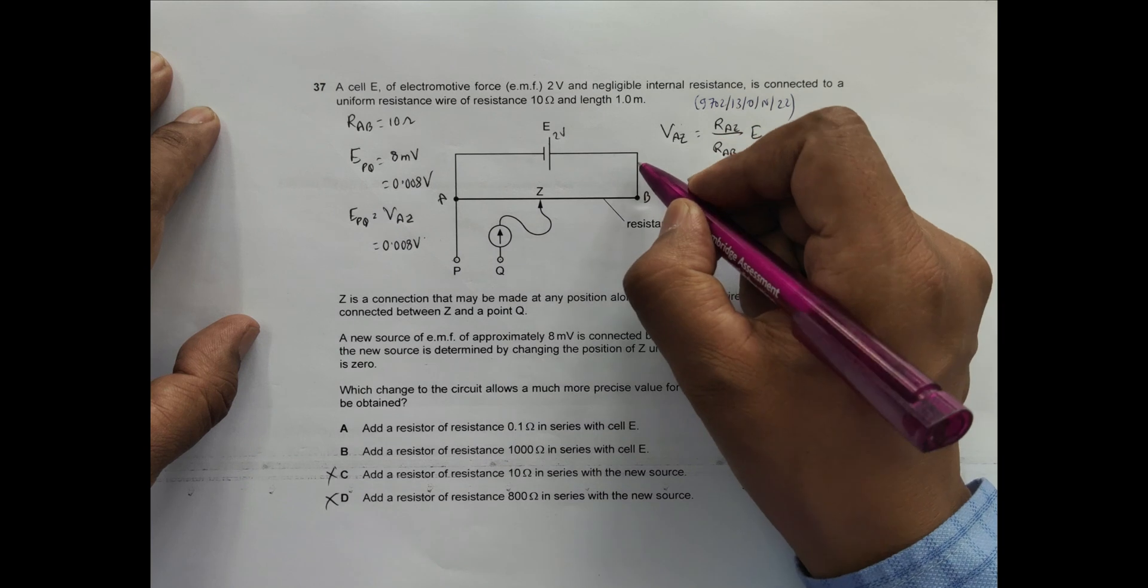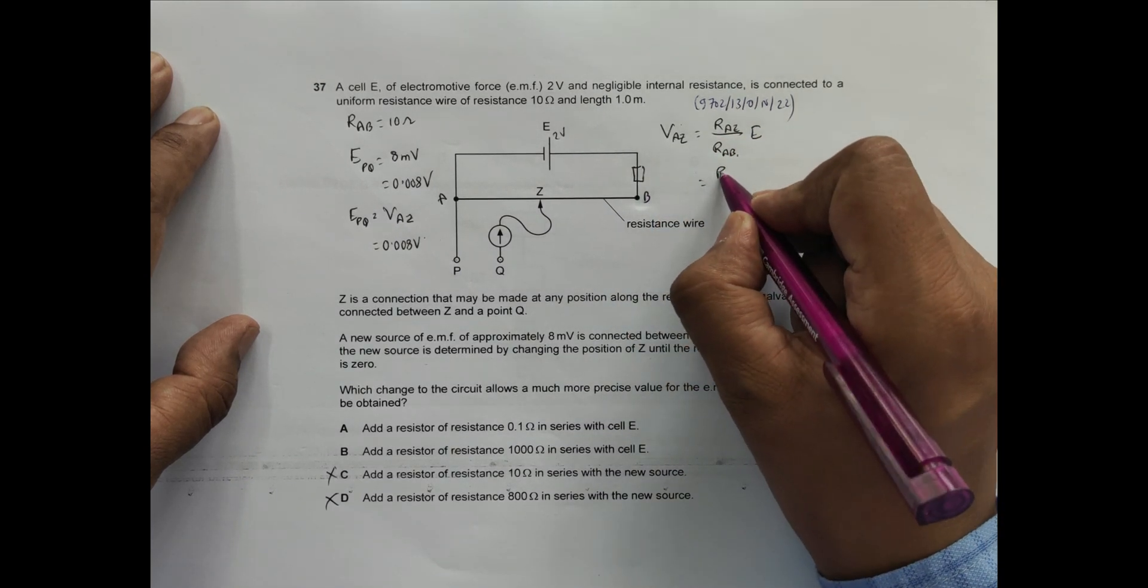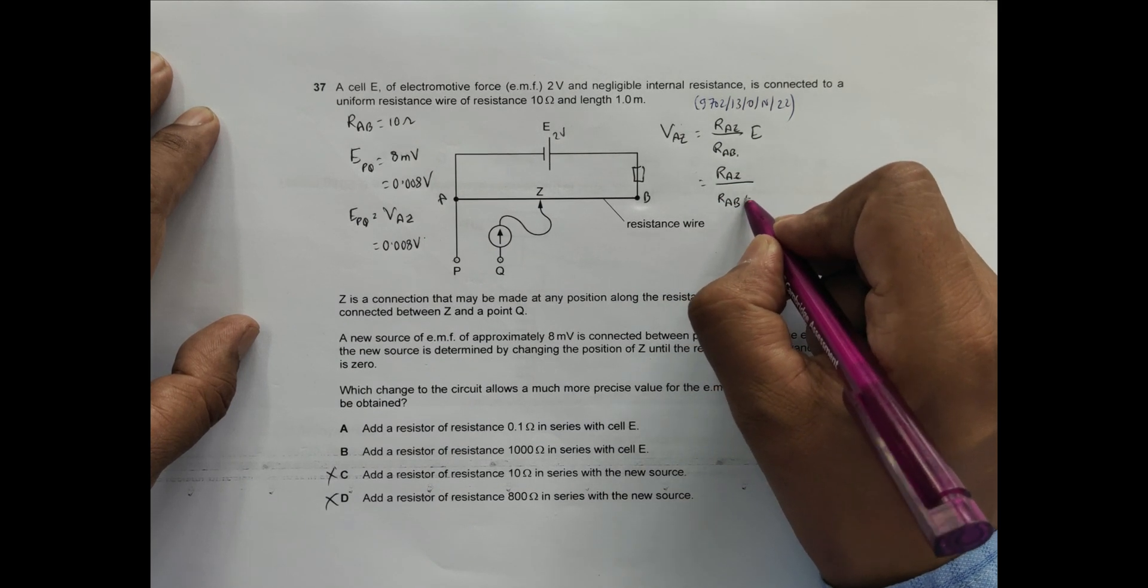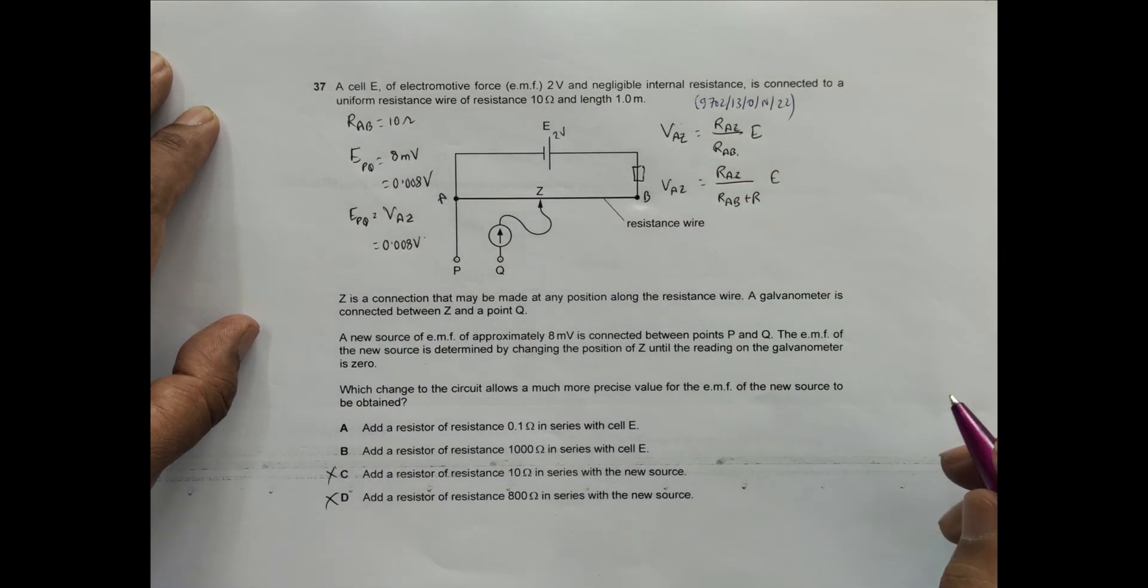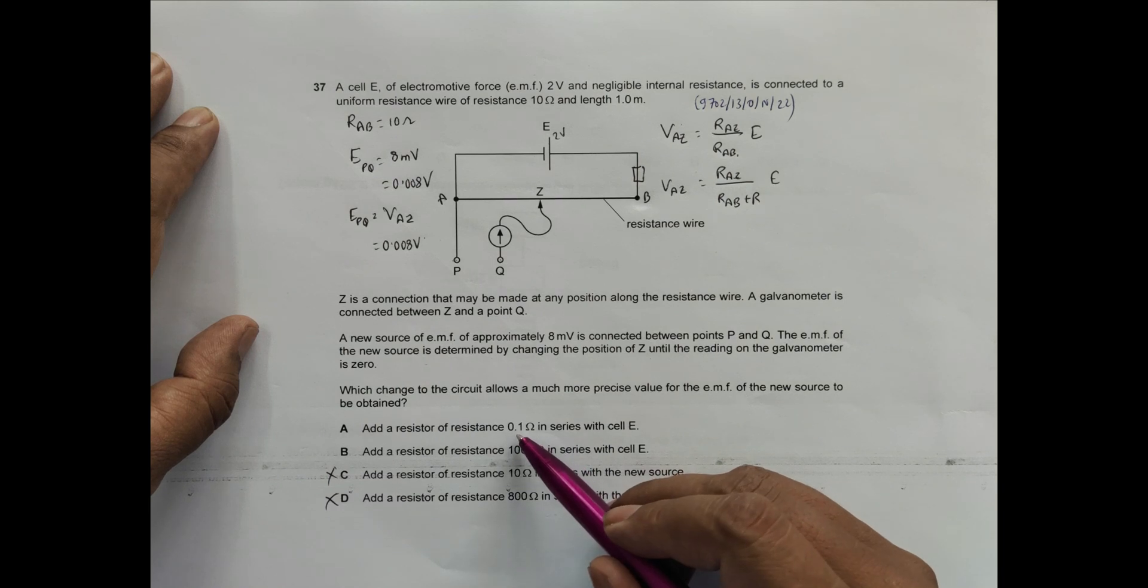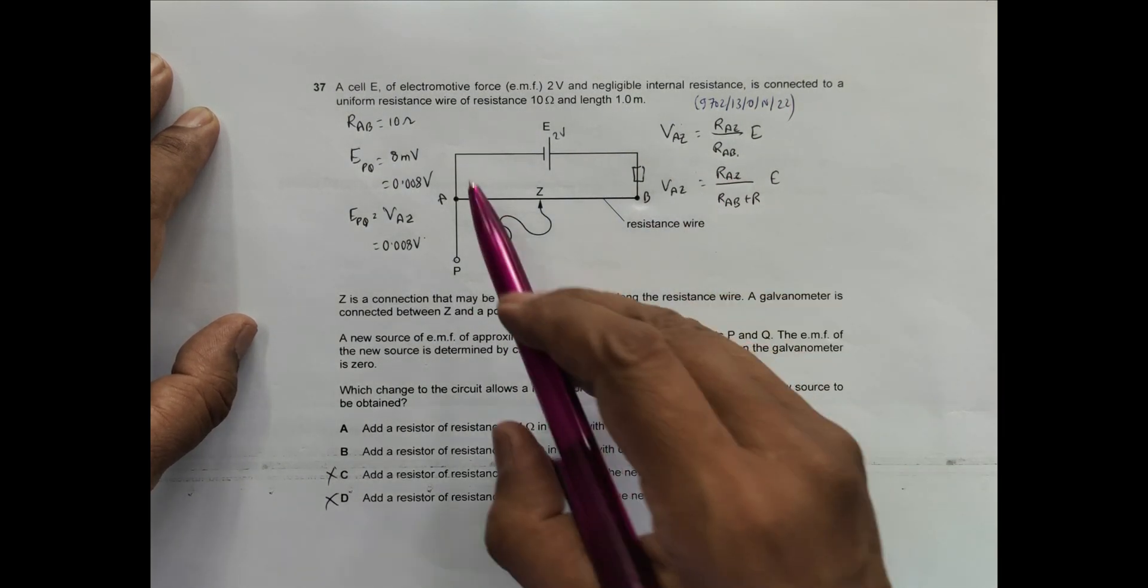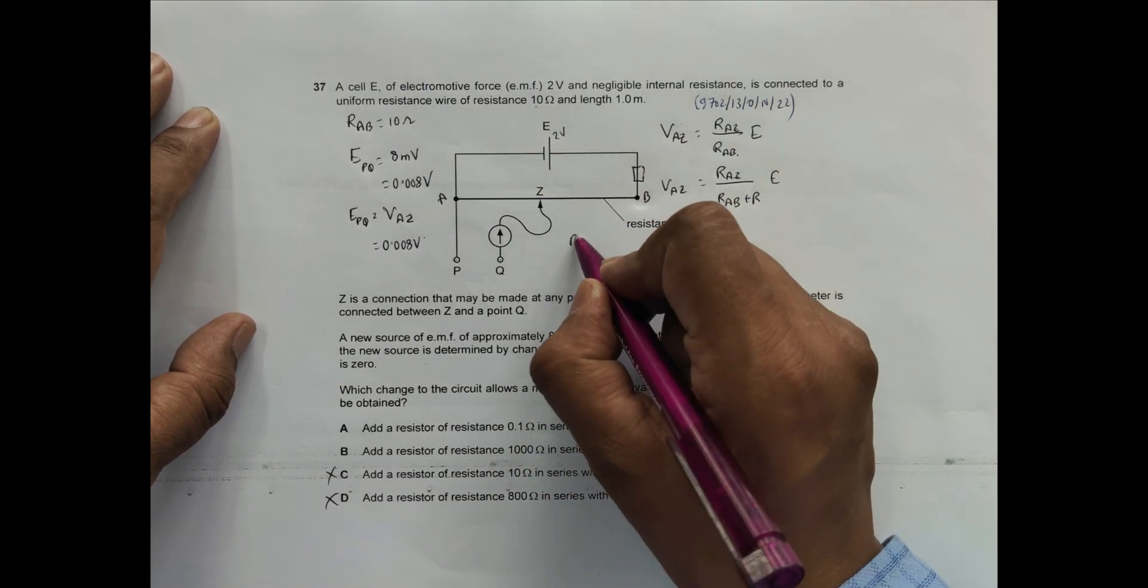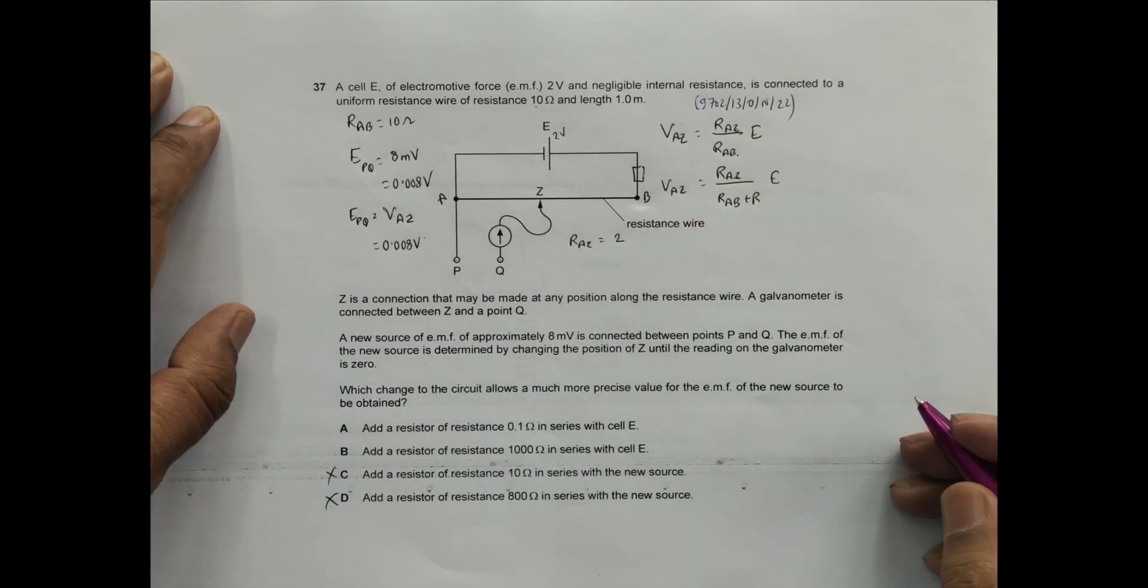If I add a resistor here, it becomes RAZ divided by RAB plus the new R, times E. If I add 0.1 ohms, let's say RAB equals 10 and assume RAZ equals 2 ohms. Then VAZ will equal...